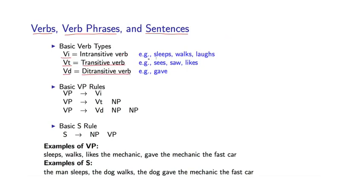For example, an intransitive verb would be sleeps, walks, or laughs. A transitive verb would be something like sees, saw, or likes. Ditransitive would be gave. And we'll have various rules in the grammar expressing this.